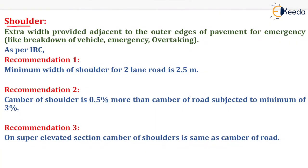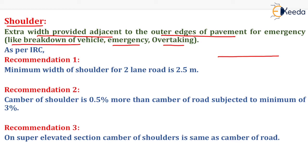A shoulder is the extra width provided adjacent to the outer edges of pavement for emergency purposes like breakdown of vehicle, emergency overtaking, etc. On the sides of the bituminous pavement there is an unpaved surface, which is provided for these emergency purposes. After this unpaved surface there will be a curb, and after that curb there will be a footpath.